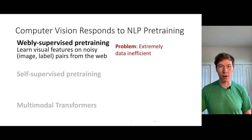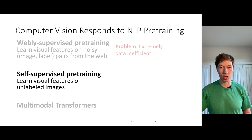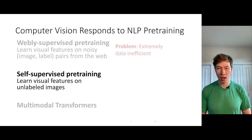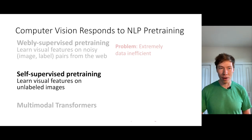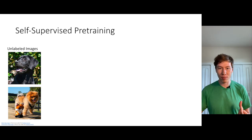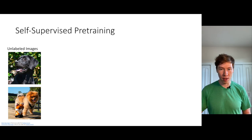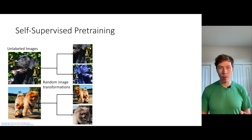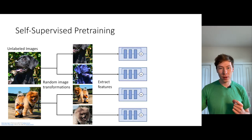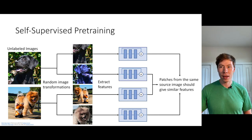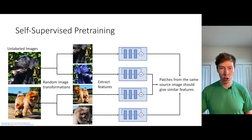Another mechanism for pre-training in computer vision, very popular in the last year, is self-supervised pre-training. Here, we have a large collection of unlabeled images and somehow learn features directly with no labels whatsoever. A common paradigm is to start with unsupervised images, perform random image augmentations — random cropping, flipping, color jittering, and blurring — pass the resulting crops through a backbone CNN to extract features, and use the learning signal that patches from the same source image should give similar visual features, while patches from different source images should give dissimilar features.